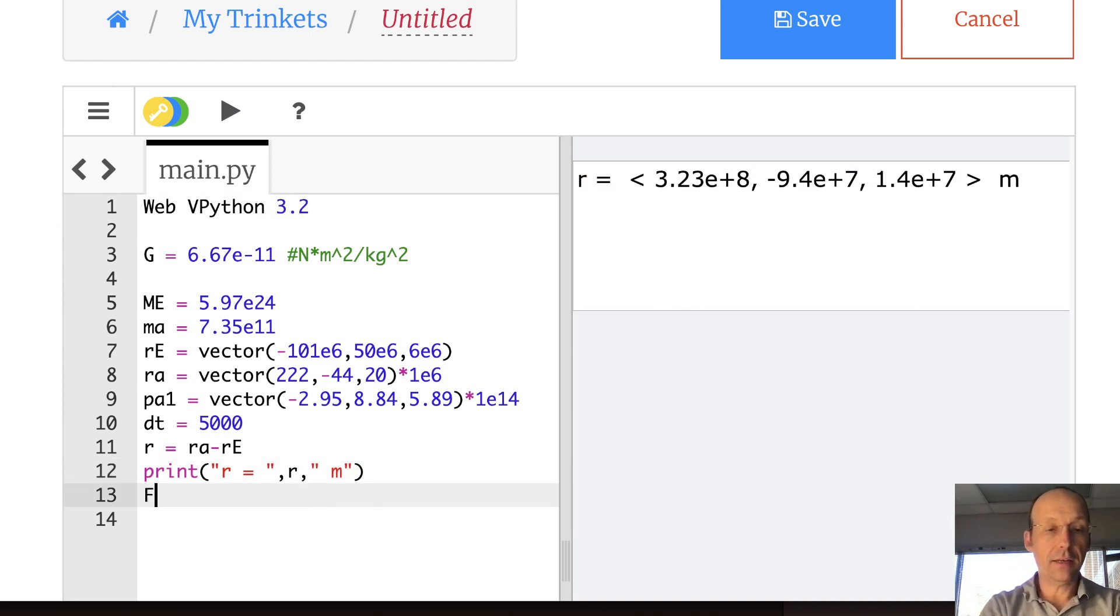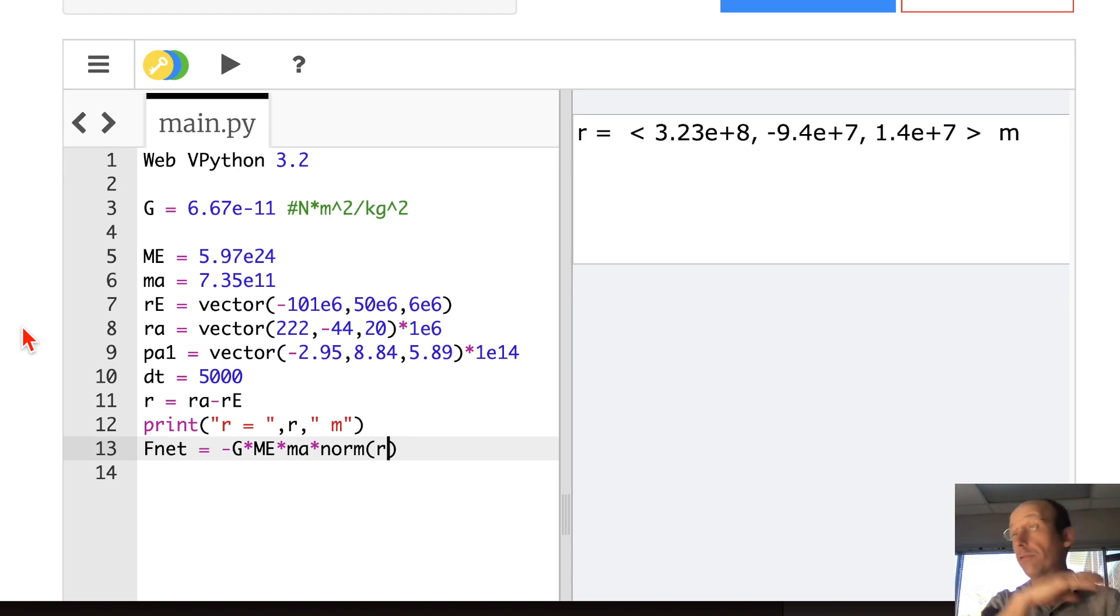Now I'm going to calculate F net. F net, I'm going to do it all in one line. Negative G times mass of the earth times mass of the asteroid times norm R. So norm is a built-in function in Python that returns the unit vector. So I don't need to do all the unit vector stuff. I can just use that function and it returns a unit vector. That's another reason that Python is so awesome. Divided by mag R. Mag returns the magnitude of a vector. And then I just square it. Square in Python is star star.